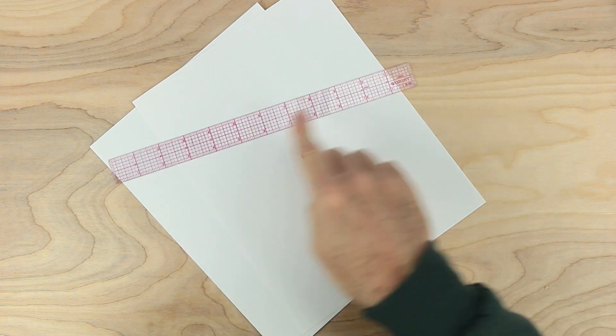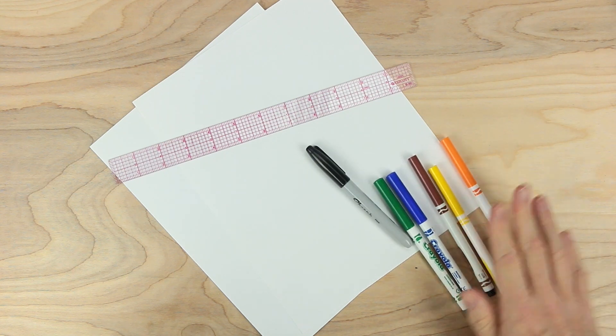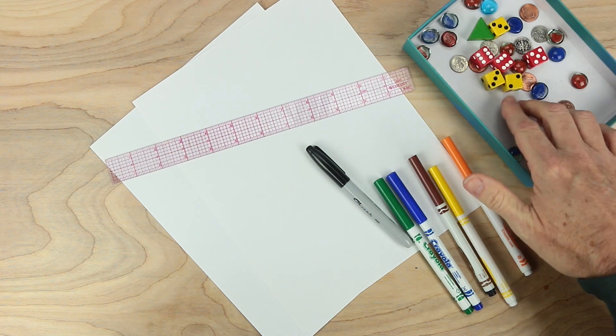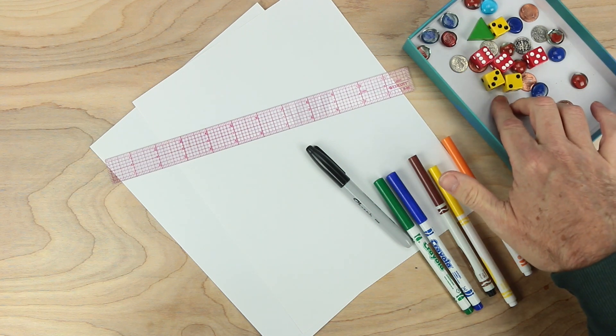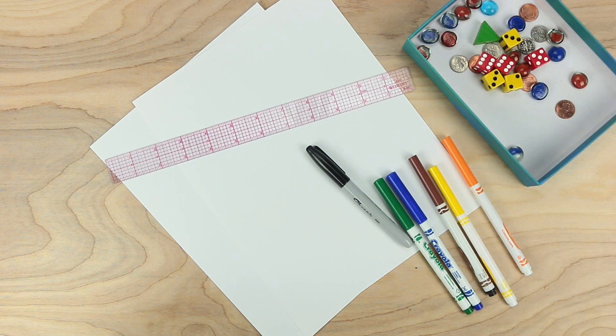And for this game a ruler. I'm using an inch ruler, 12-inch ruler, maybe some other colored markers as well, and then some playing pieces. Dice would be good. If you have six, that's great. If you don't, three, we'll just use them twice, and I have some playing pieces as well. Oh, and a bear.